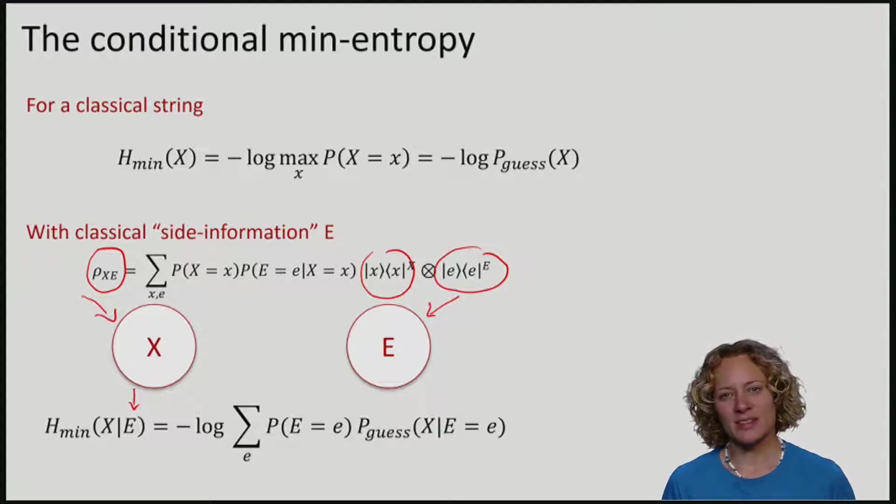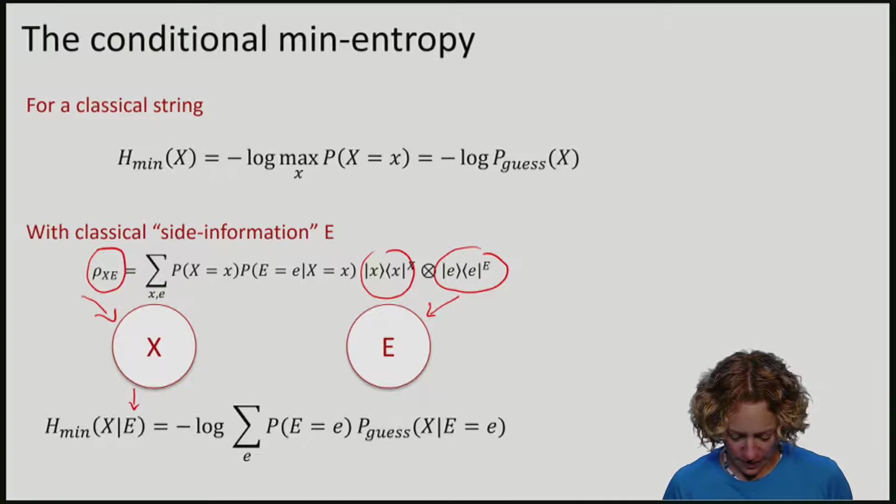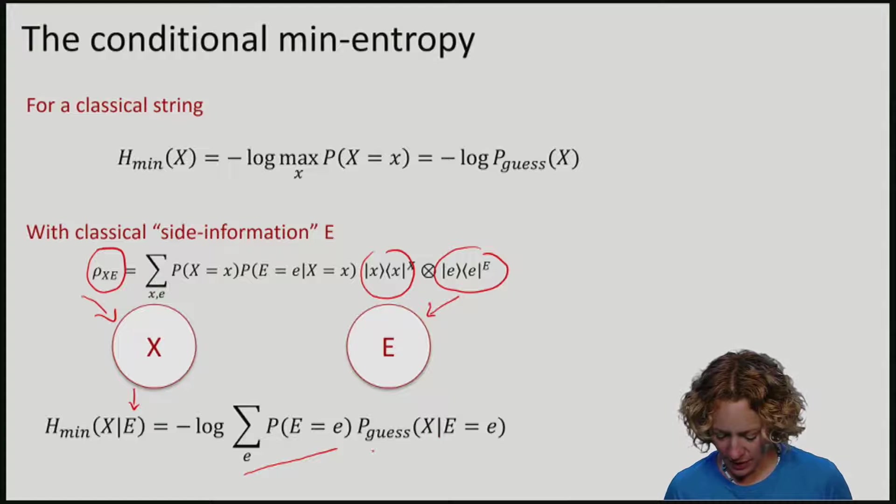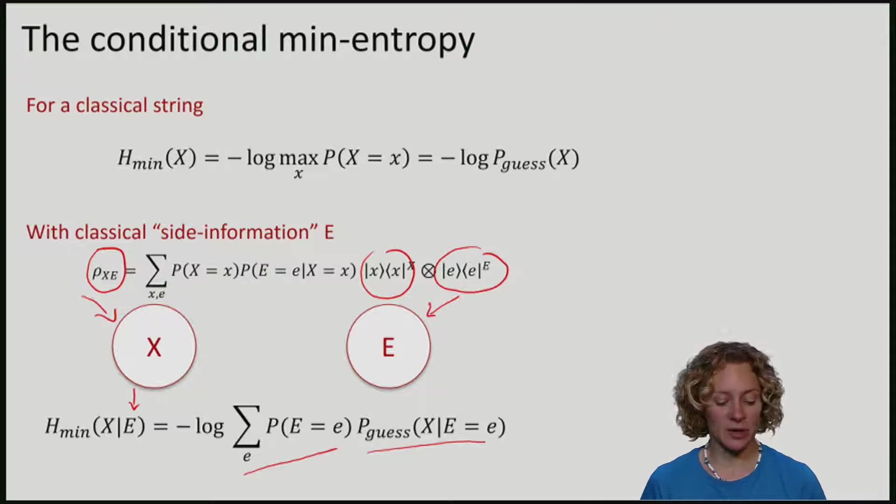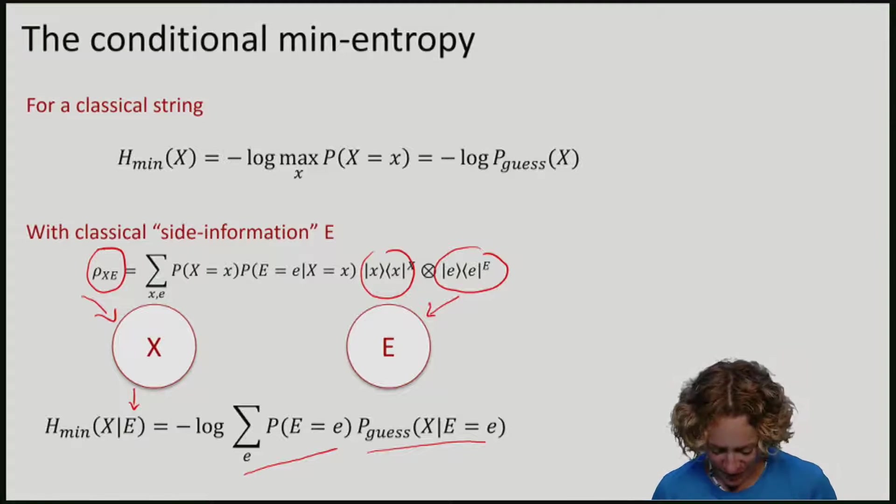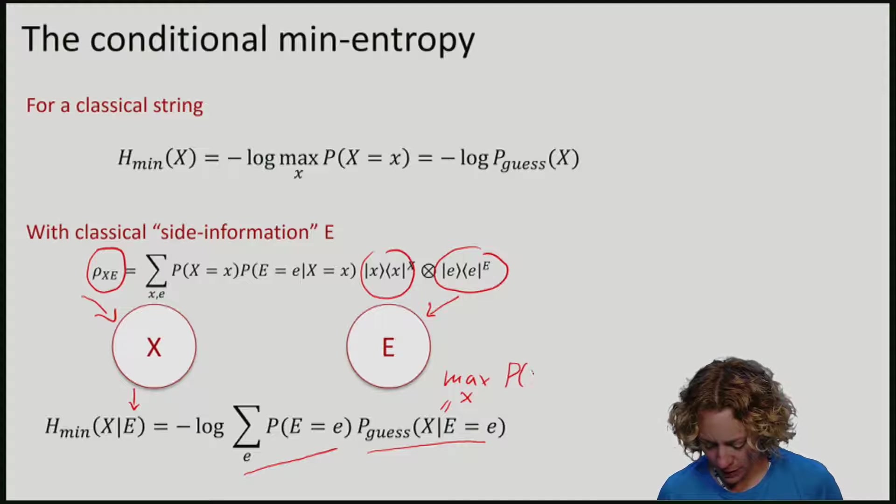We are thus interested in the average over e. And for each particular e, I have a particular probability of guessing the correct x. And remember that I will always guess the most likely x, which means that this here is just a maximum over x, p of x given e.